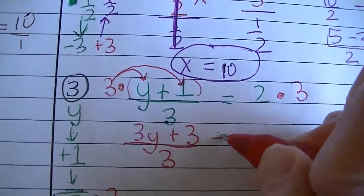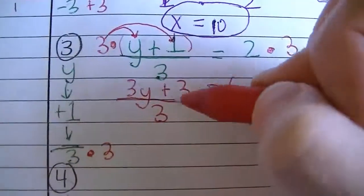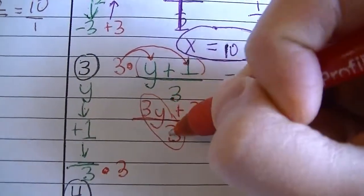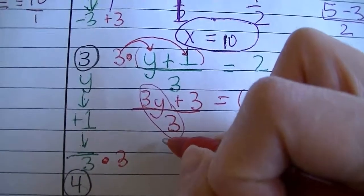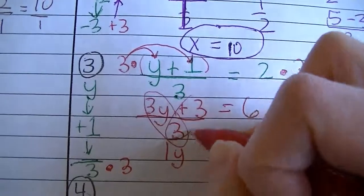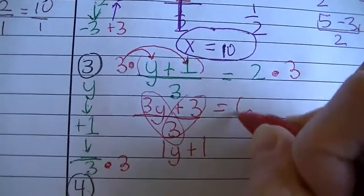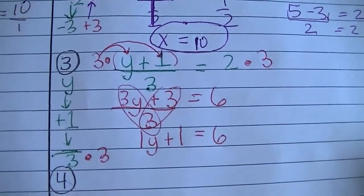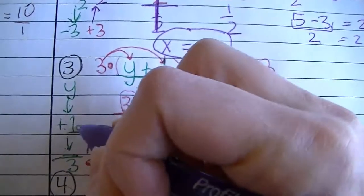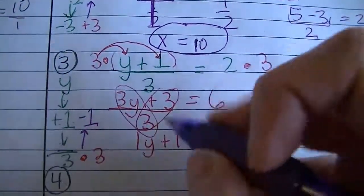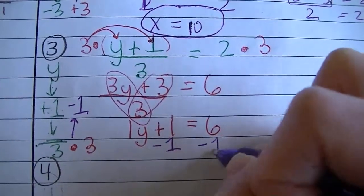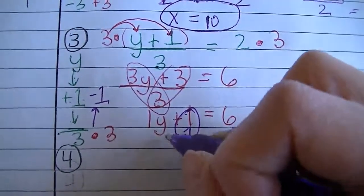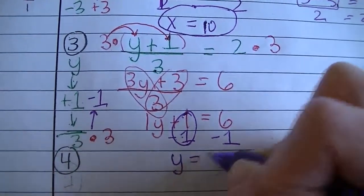2 times 3 is 6. You should know you can simplify right here: 3y divided by 3 is 1y, or y, same thing. And then positive 3 divided by 3 is a positive 1. That will equal 6. Now that it's all simplified, go back up that ladder. The inverse operation of plus 1 is to subtract 1, and you'll do that on both sides of that equal sign. 1 take away 1 is 0. 6 take away 1 is 5. So I'm left with 1y — or you could just write y — equals 5.